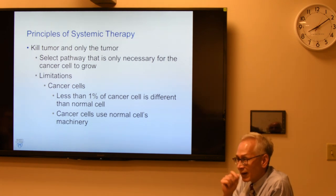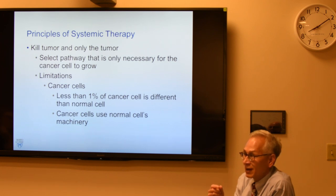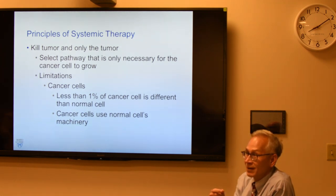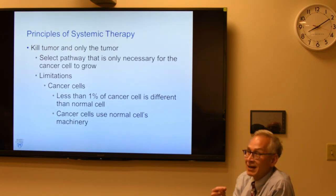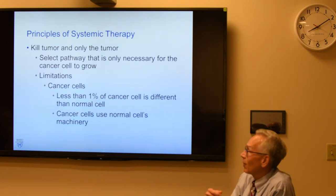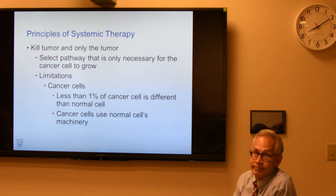If you look at a cancer cell, the machinery is about 99% normal. It's less than 1% abnormal. We're trying to leverage that 1%, but 99% of the cell components are normal. So you're going to get collateral damage all the time.